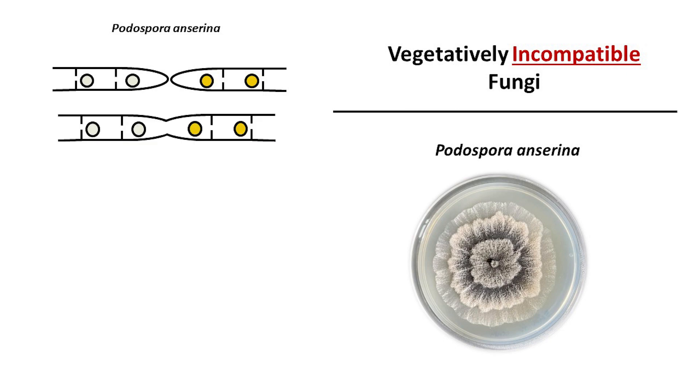Once contact is established, both cells will initiate the process of cell fusion in which cell walls are remodeled, plasma membranes fuse, resulting in a shared cytoplasm and formation of heterocarion, the cell with two different kinds of nuclei.